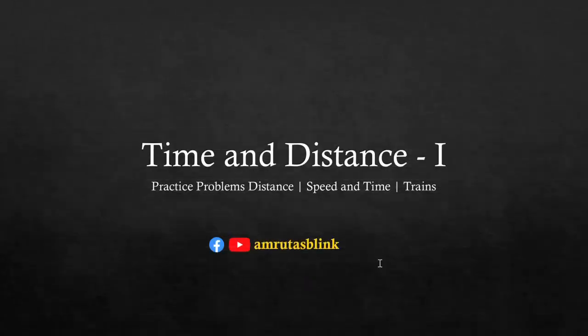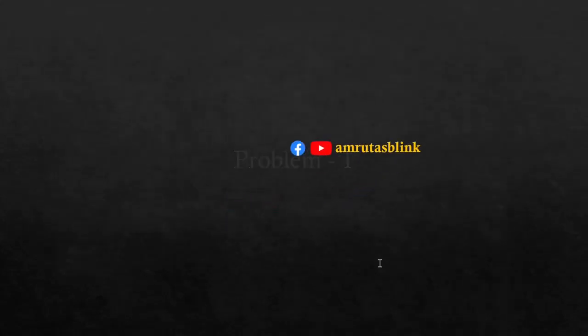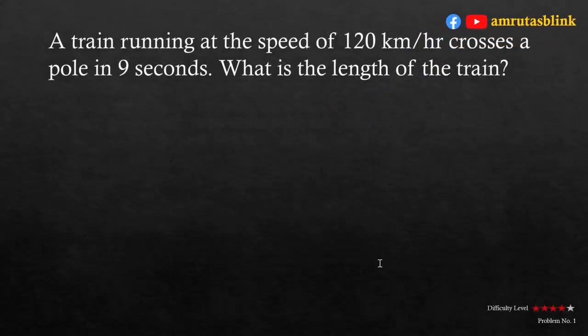Time and distance, first video — practice problems on distance, speed, time, and trains. Problem number one: A train running at a speed of 120 km per hour crosses a pole in 9 seconds. What is the length of the train?